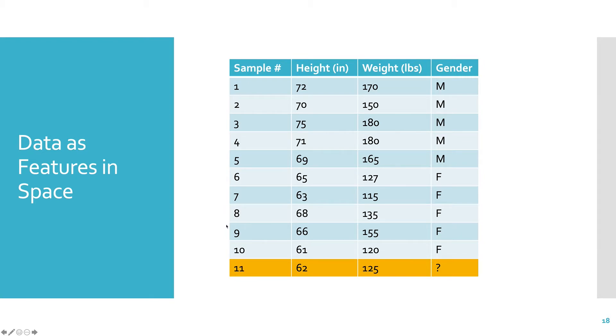So if I have all that data in feature space, and I'm just trying to figure out, I have this new sample, and the height is 62 inches, and the weight is 125 pounds. Do I think it's a male or a female?